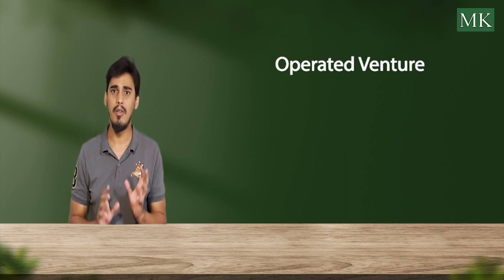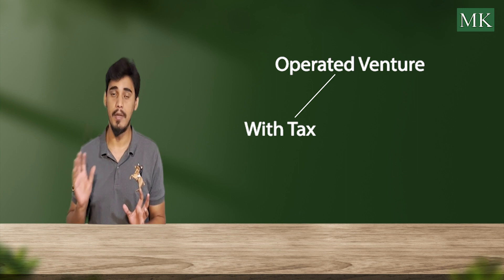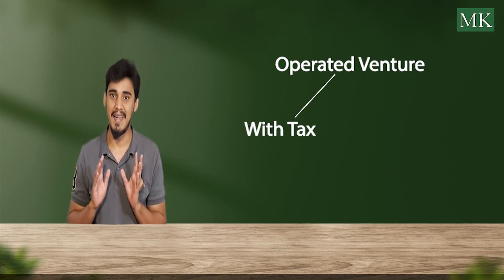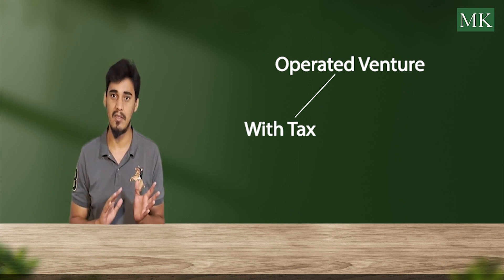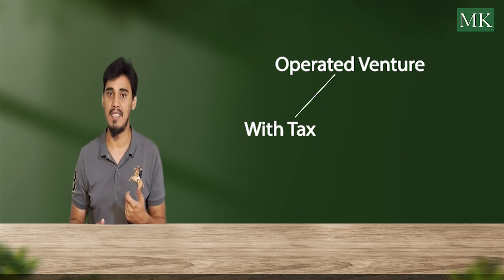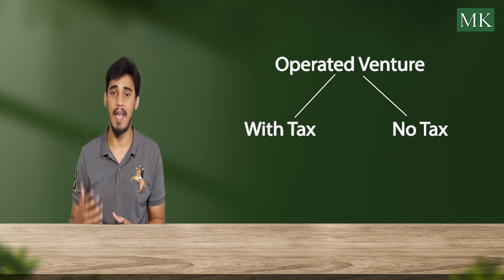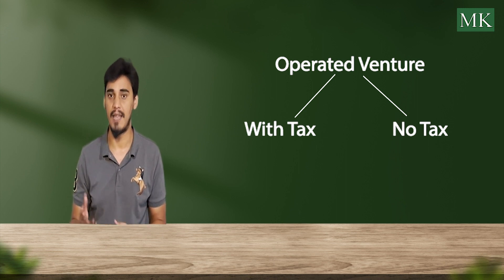The operated venture has two sub-types. Number one is with tax, in which you have to maintain the tax code for the venture. The second is without tax, in which you do not have to maintain the tax code for the venture.